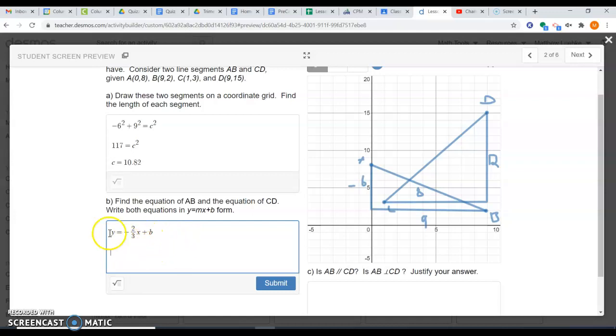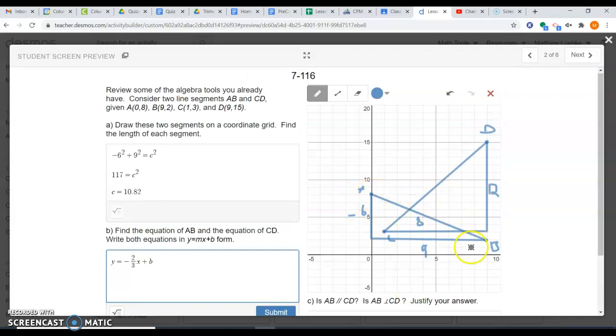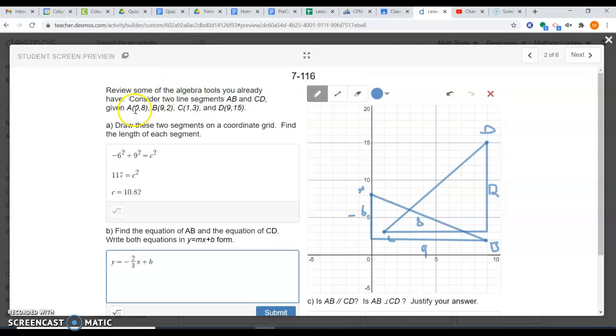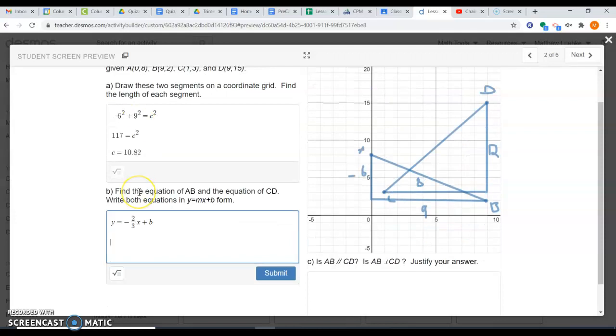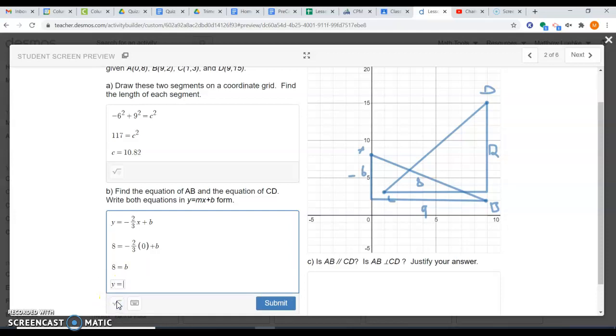Now we still need to find a b value. We can plug in an x and a y based on a point on that line. Point A is on that line, so let's plug in point A, which means eight is our y value, zero is our x value. We have eight equals negative two over three x, and the x gets replaced by zero, plus b. Solving this for b, we have negative two thirds times zero, which is zero. So ultimately, eight equals b. I can write my final equation: y equals negative two over three x plus eight.